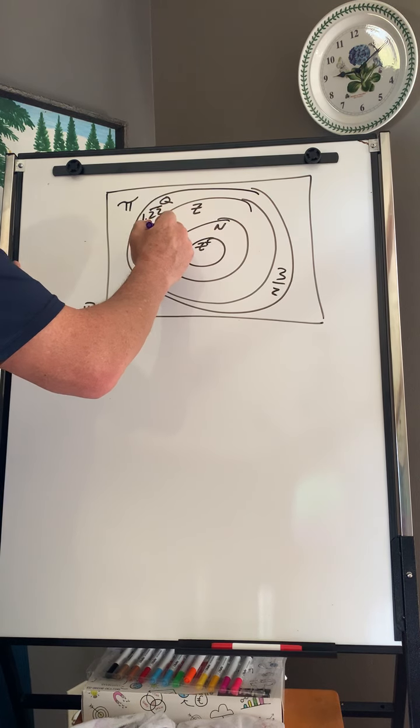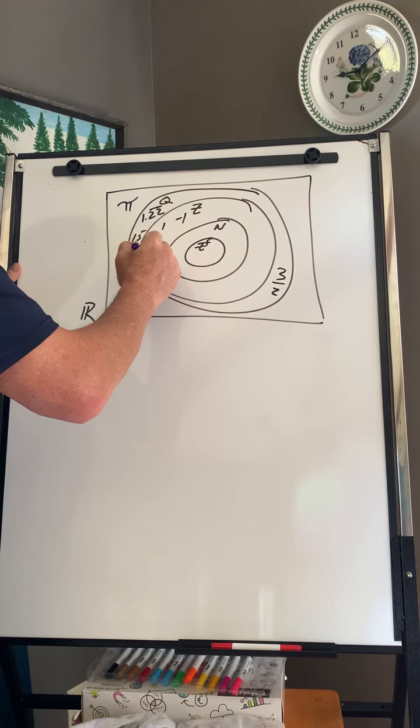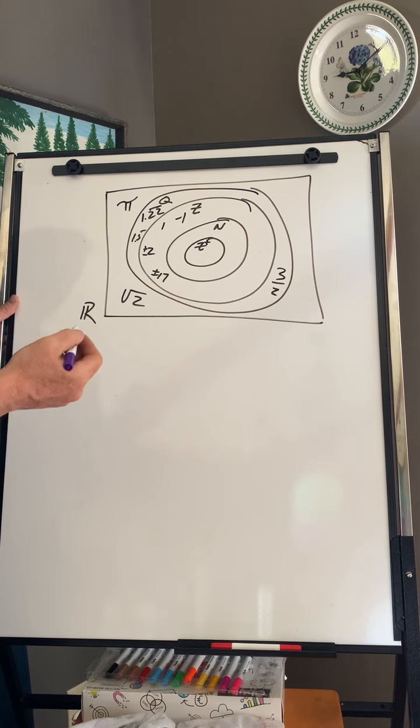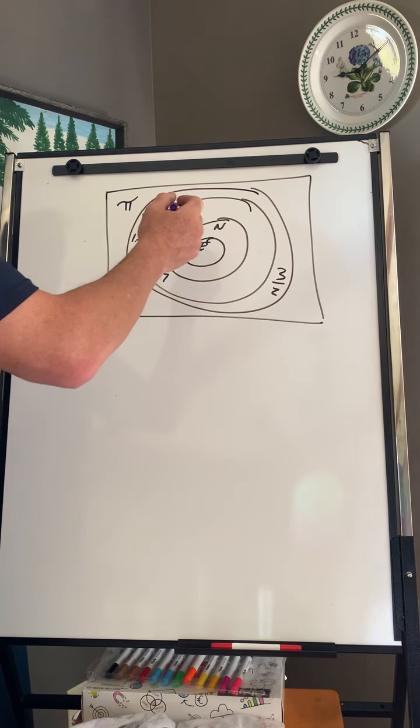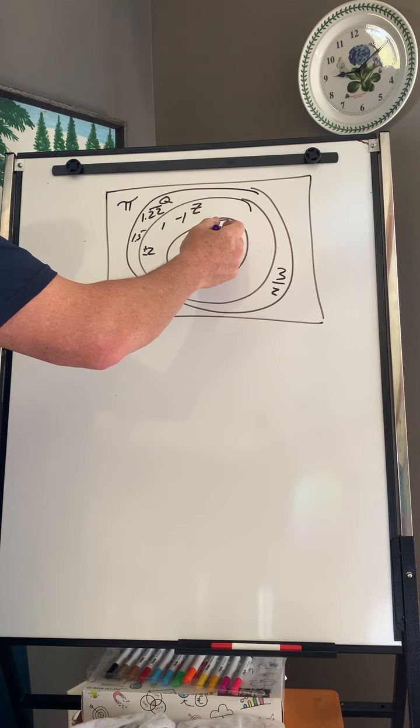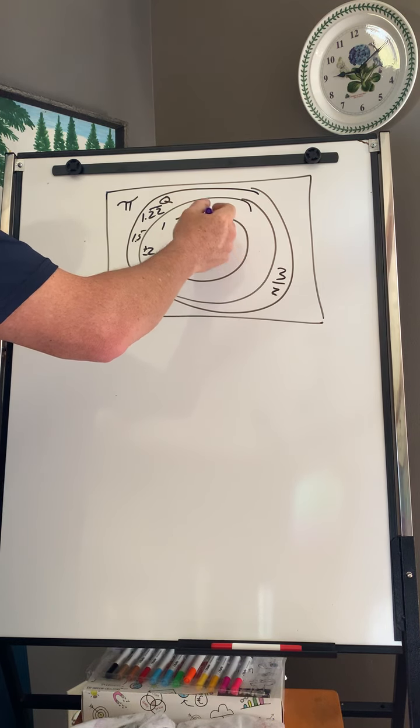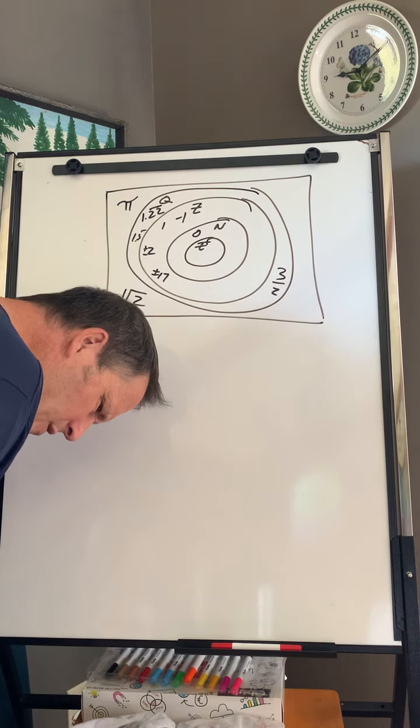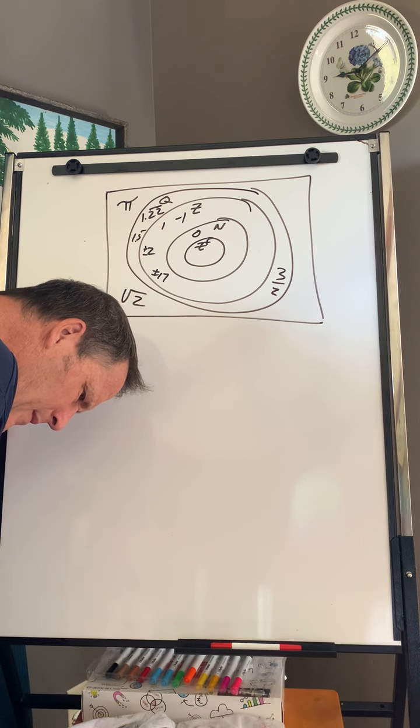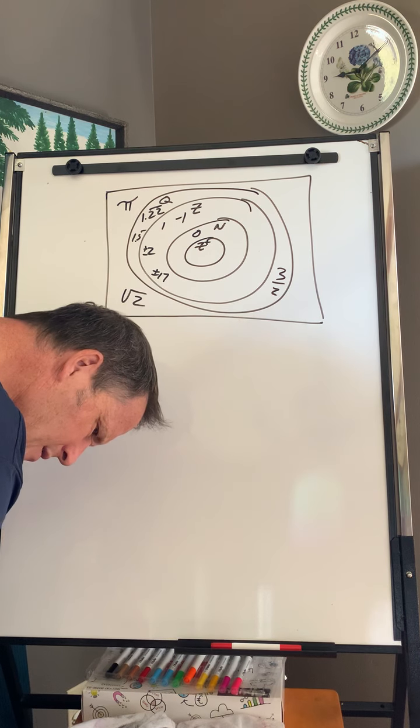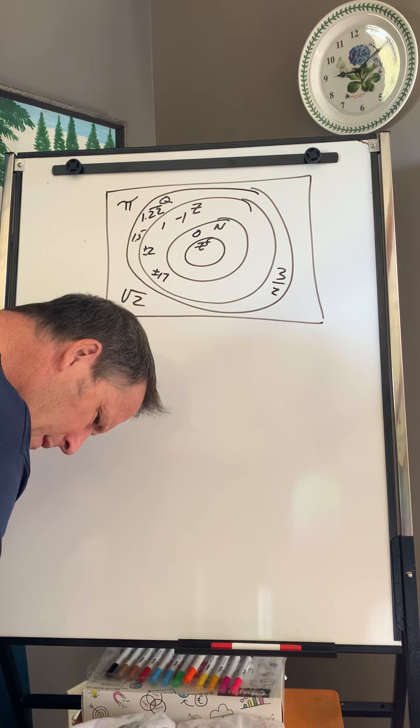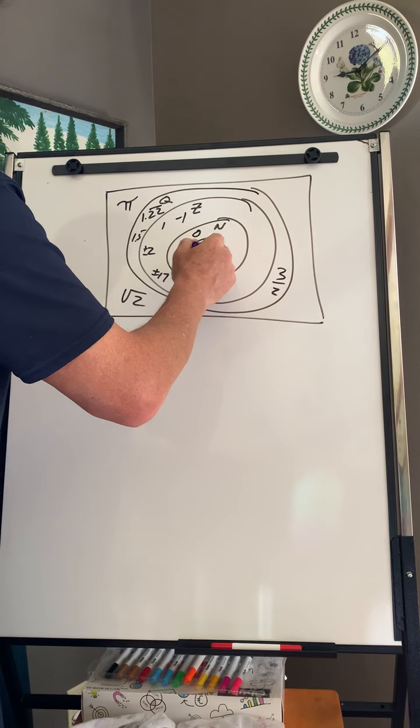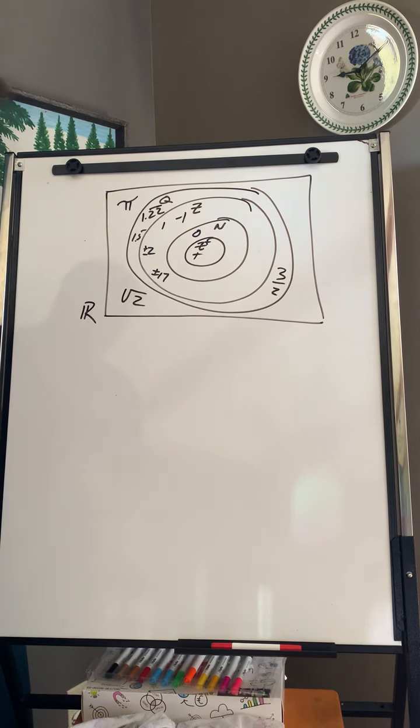And inside that is integers: 1, negative 1, 2, plus or minus, plus or minus 17. Those are all integers. So they go in there. Natural numbers. The only thing that's in natural numbers - natural numbers have 0. And then, these are only positives. So they didn't add the positive one.